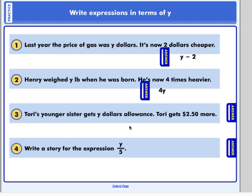Number three. Tori's younger sister gets y dollars allowance. Tori gets two dollars and fifty cents more. Here's our clue word, more. So, the expression would be y plus two fifty.